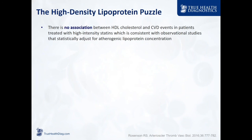Robert Rosenson, a world expert on high-density lipoprotein, notes in his recent incredible review that there is no association between HDL cholesterol and CVD events in patients treated with high-intensity statins, which is consistent with observational trials. You have to have a trial where HDL cholesterol has been adjusted for atherogenic lipoproteins — meaning LDL-P or ApoB. Once you adjust for them, HDL-C disappears as having meaning.